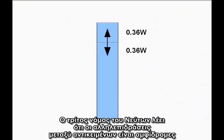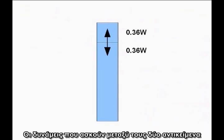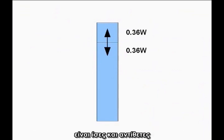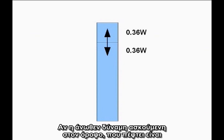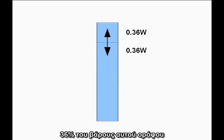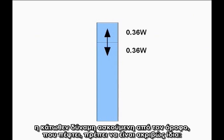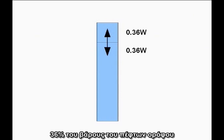Newton's Third Law says interactions between objects work both ways. The forces two objects exert on each other are always equal and opposite. If the upward force acting on the falling block is 36 percent of the weight of the falling block, the downward force exerted by the falling block must be exactly the same, 36 percent of the weight of the falling block.